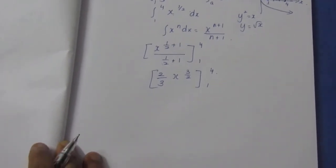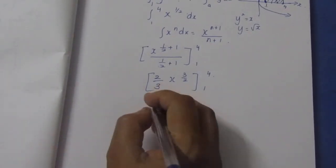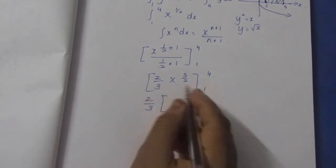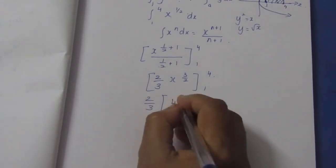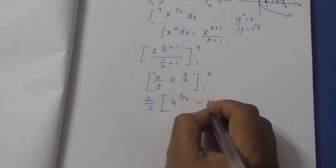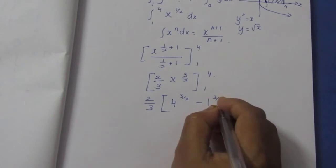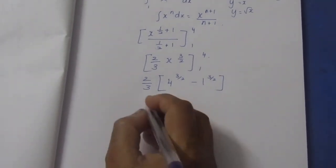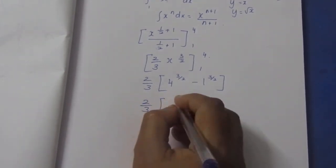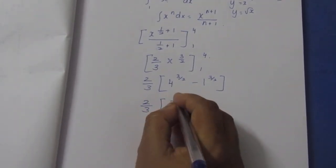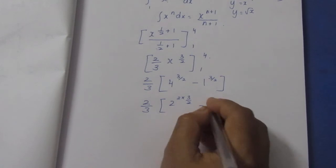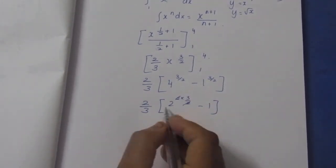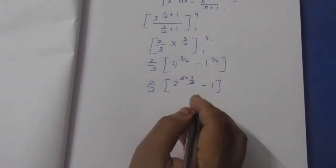Substituting 4: we get 2 by 3 times 4 power 3 by 2 minus 1 power 3 by 2. Since 4 is 2 squared, 4 power 3 by 2 is 2 squared to the power 3 by 2, which is 2 cubed, equal to 8. So 8 minus 1 gives 7.